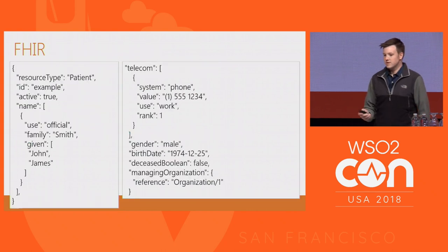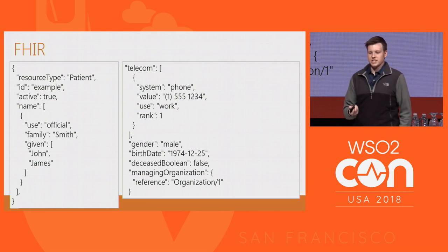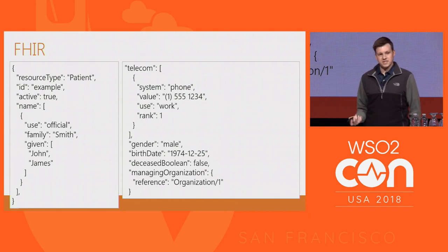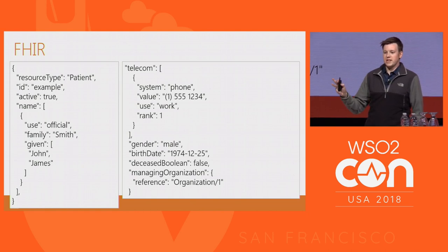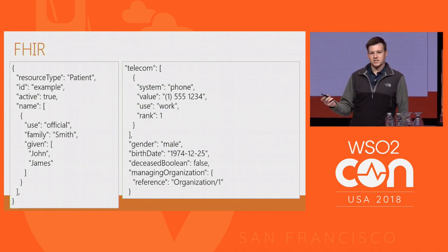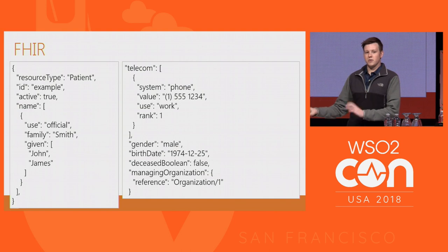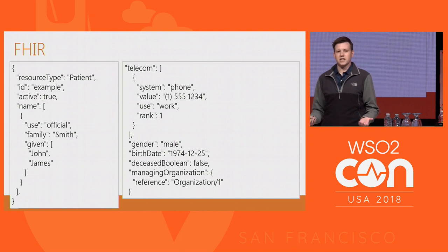Here's an example of what a patient resource looks like. You have name information, telecom such as a work number, gender, birth date, whether they're deceased. It almost works like a graph database — you can link different elements together and form a picture of the patient: what facility they were at, who their nurse is, all their encounters and lab reports. It's a very logical way of looking at healthcare data.